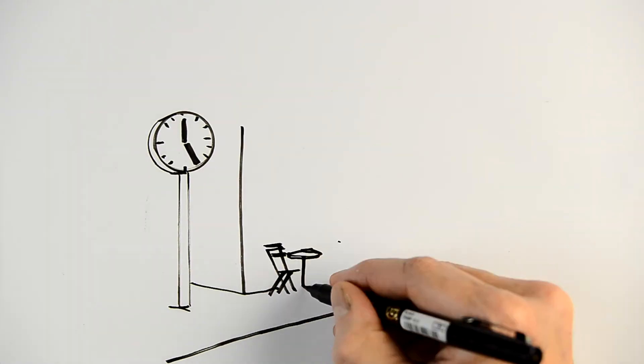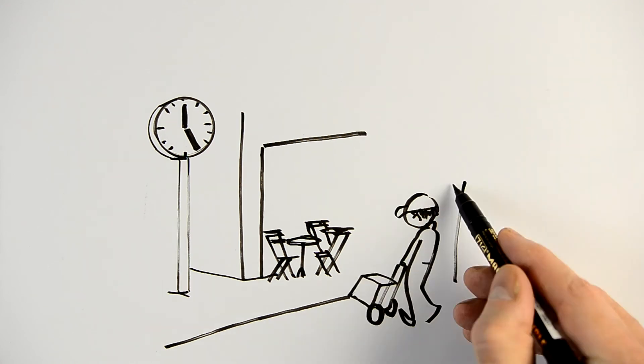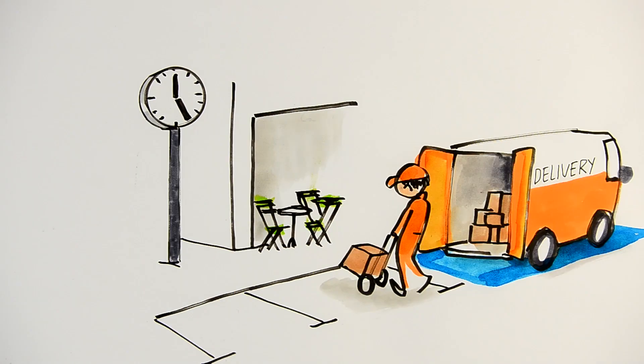Flexible curbside management is the active and flexible management of how these stakeholders use the curbside. For example, one curb can have different users over time during the day or depending on the seasons.